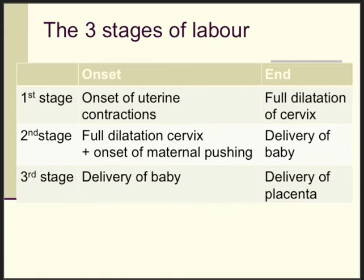These three stages: the first stage starts with the onset of uterine contractions and finishes when the cervix is fully dilated. The second stage starts when the cervix is fully dilated and the mother starts pushing, working together with uterine contractions, and it finishes when the baby is born. The third stage finishes when the placenta is born.